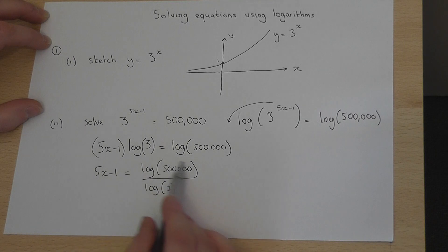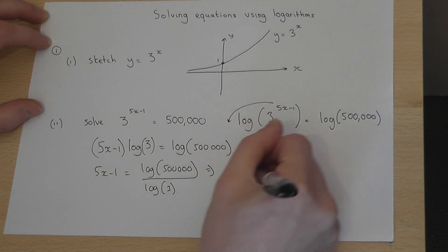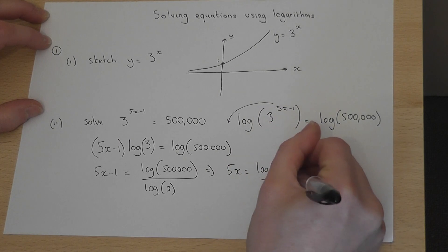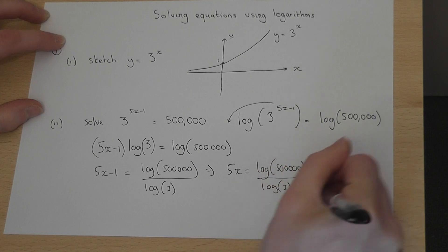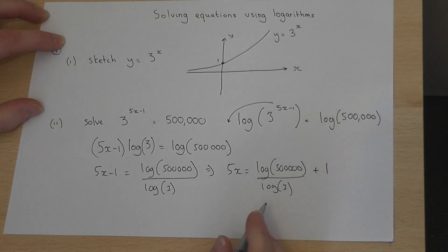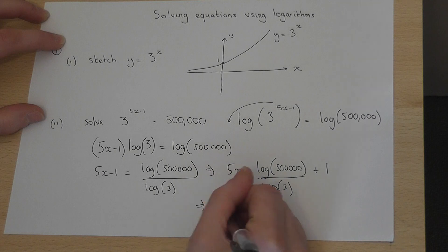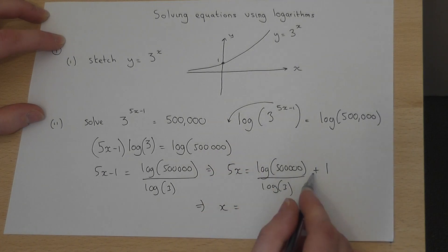If I now add 1 across to the other side, I get 5x is equal to log of 500,000 over log of 3 plus 1. So to get x, I must divide all of this by 5.